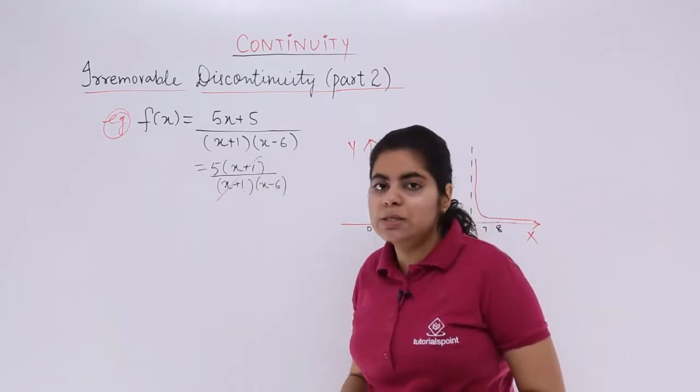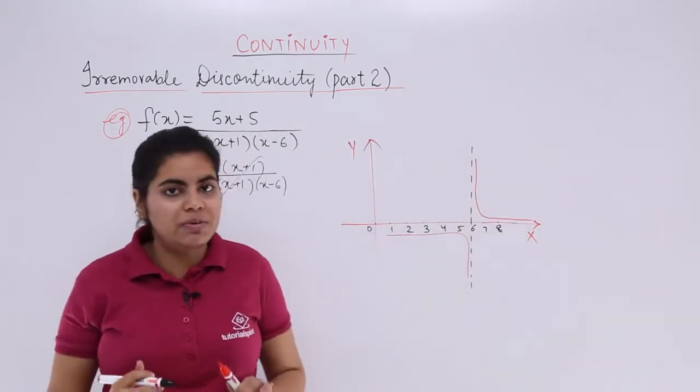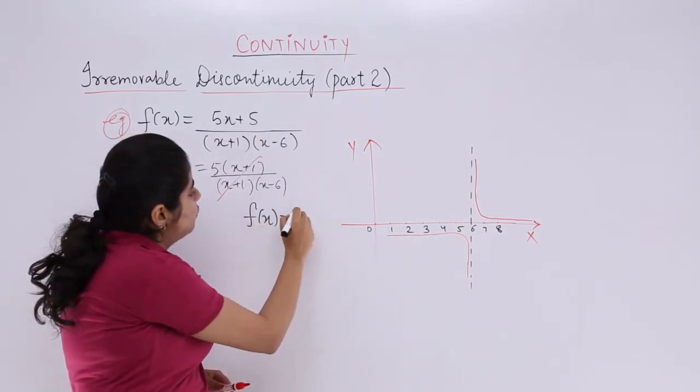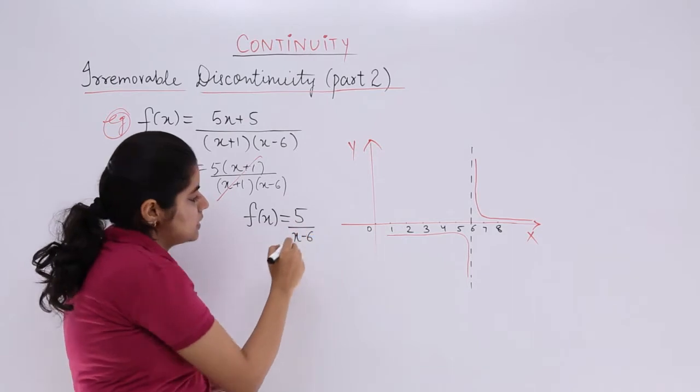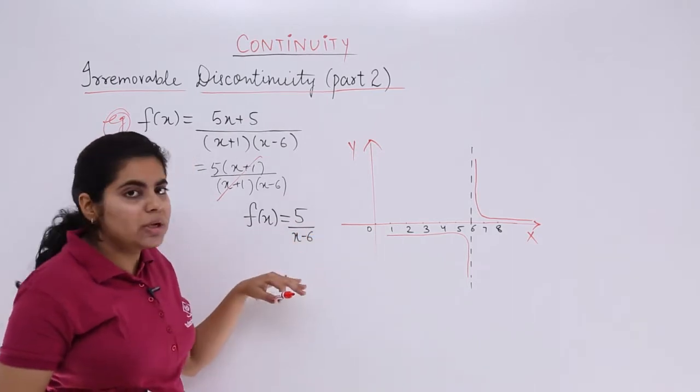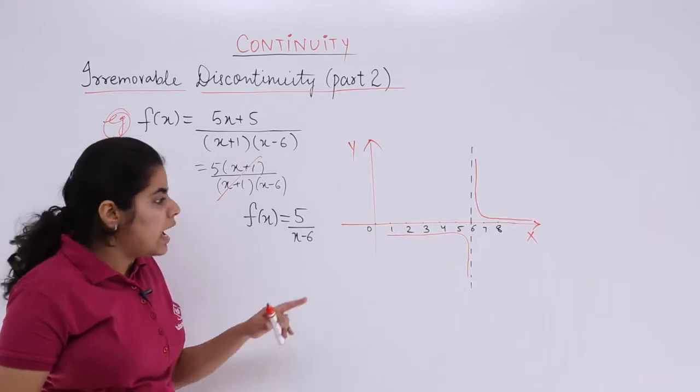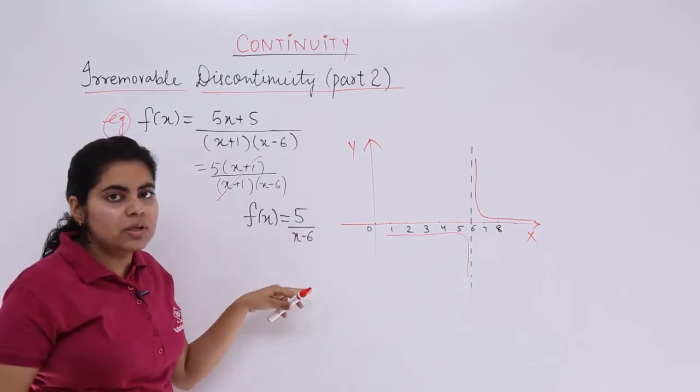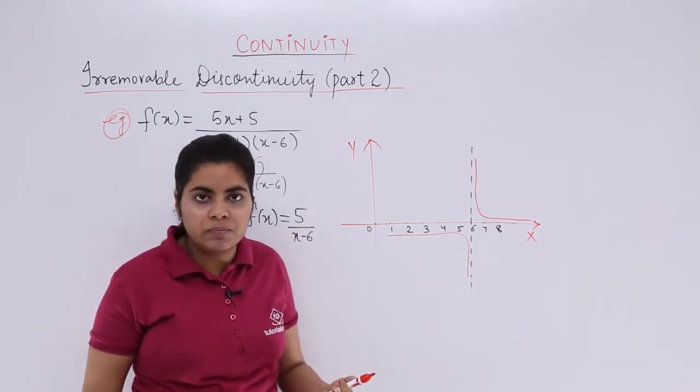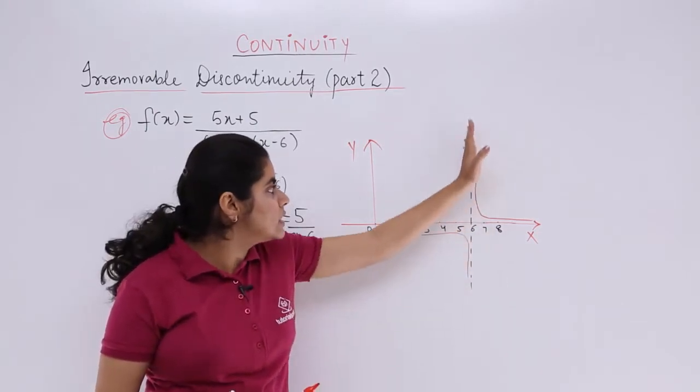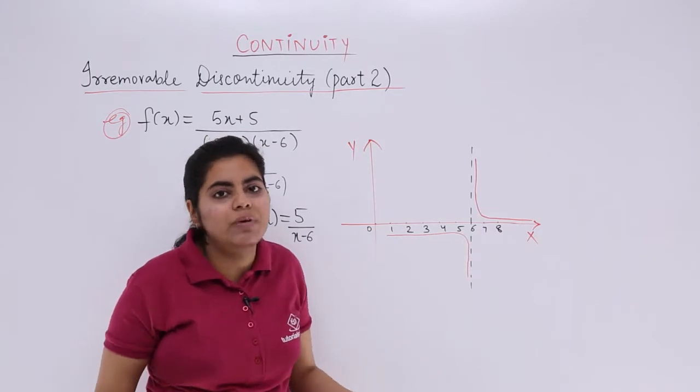Things get cancelled. x + 1 gets cancelled. The function value now changes. It actually is f(x) = 5 / (x - 6). Now, what about when x is equal to 6? When x is equal to 6, it becomes 5/0, again indeterminate. So I cannot talk about x being equal to 6. When x is equal to 6, it is nothing but a vertical line; there is no value that you get.